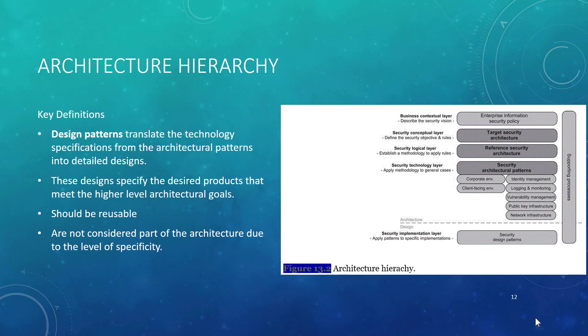Finally, we move down into design patterns — very detailed designs that specify the designed products meeting the higher-level architectural goals. Ideally it's modular so that it can be reused, and it's typically not considered part of the architecture. We move out of architecture into design when we get into the security implementation layer type. So we're starting at the top with policy, moving through a series of documents from global to very specific, down to actual implementations and the rules around those implementations. This gives us the underlying architecture hierarchy we need for a solid foundation for our security operations.